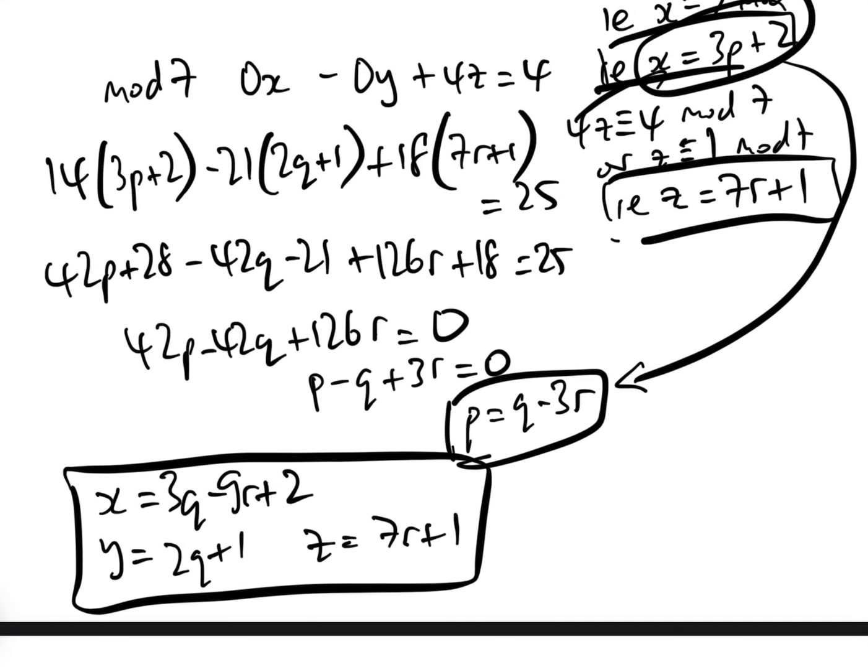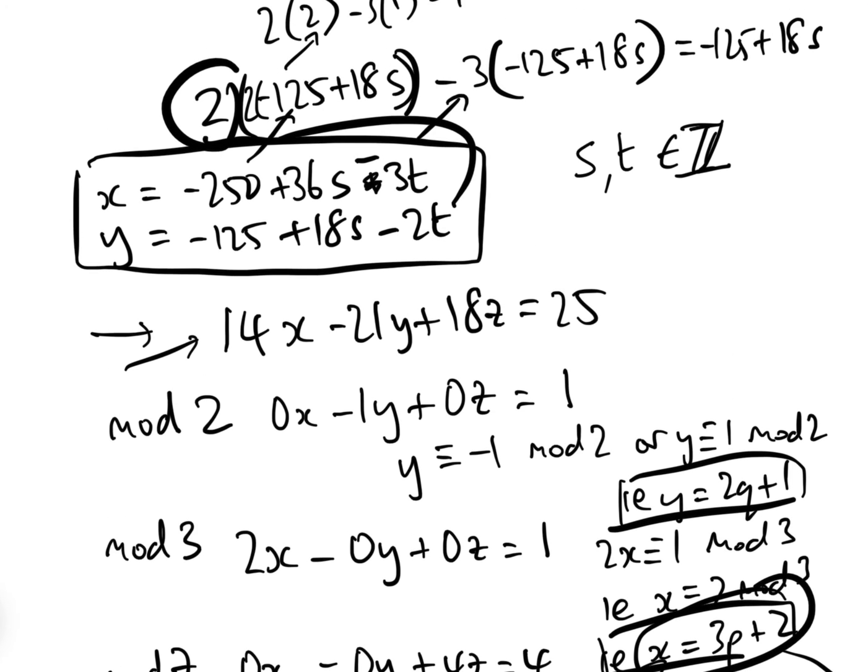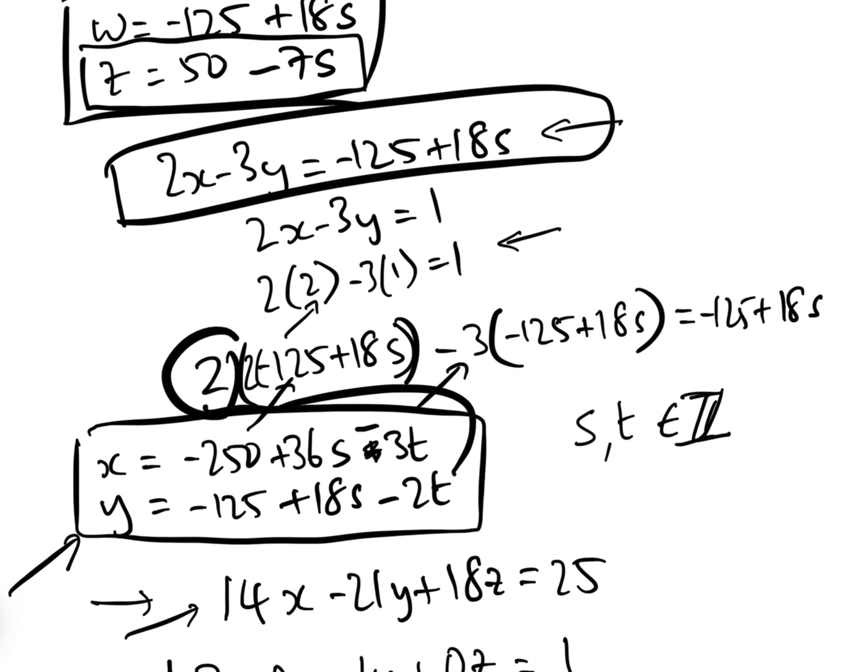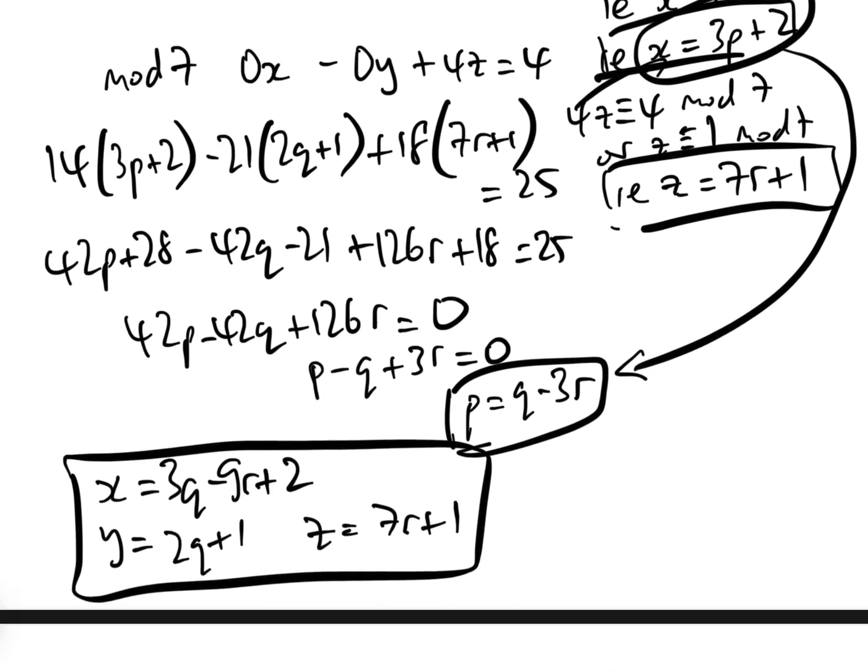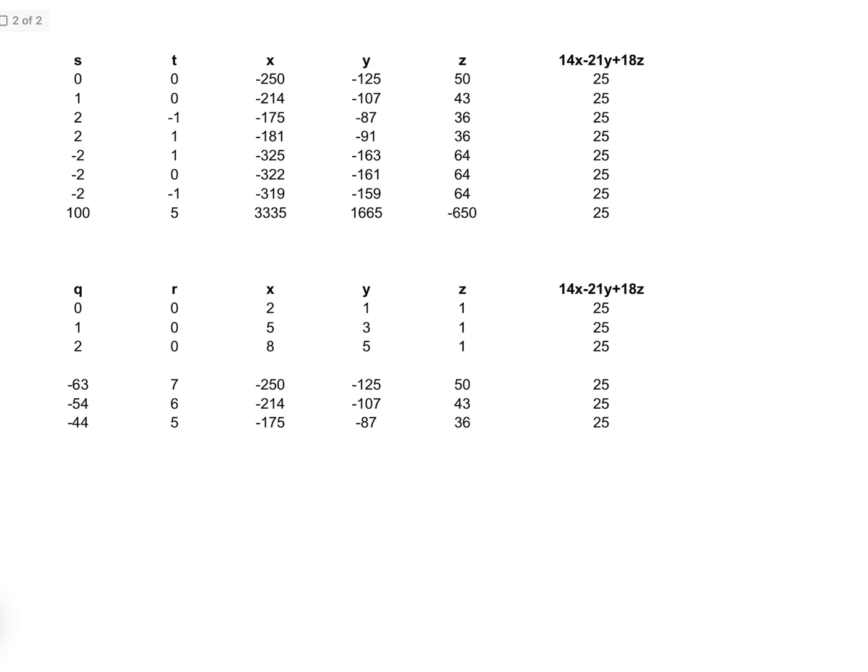Now you might think this is completely different from the solution that we just found here, x and y being here, and z being 50 minus 7S. Well it is, but if you put them in, they will still give the same solutions. If we actually have a look here, I've just done a little table.